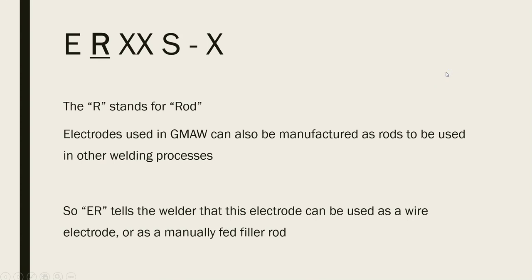The next letter, R, stands for rod. When you put E and R next to each other, it's basically saying this electrode can be found either as a wire or as a length of filler rod. When it's in the shape of a filler rod, it's going to be a lot thicker than the wire, but it's for a different welding process. The electrodes we're using in GMAW can also be used in what's called GTAW, or gas tungsten arc welding — another process we'll talk about at another time. So just know that when you see E and R next to each other, it's letting you know that this electrode wire can also be used as a filler rod.